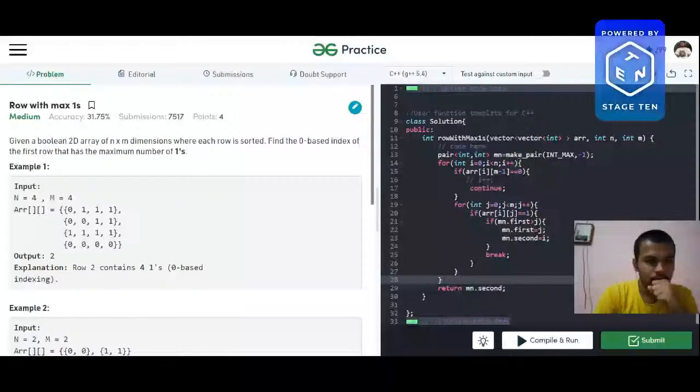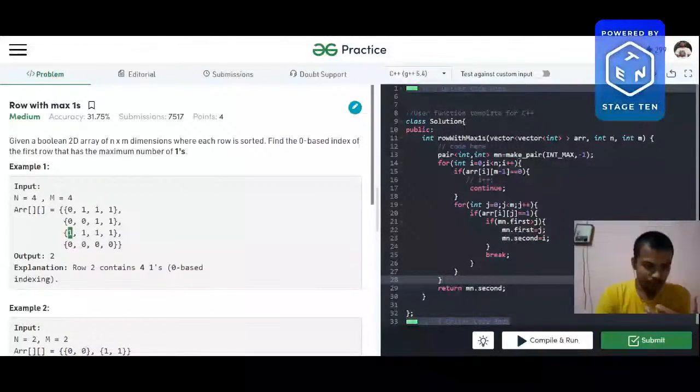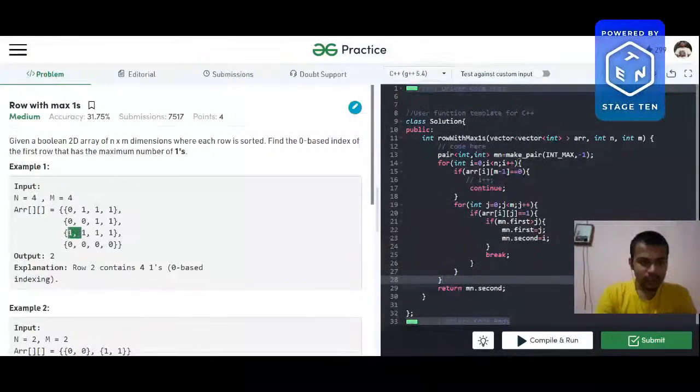So we want to return the row which has the least occurrence of one. I mean, least index. So here the least index is zero. We can see that at column index number zero it has a one here. So you don't need to check each and every one.